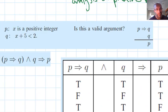Now we're going to look at an example. We've got P: x is a positive integer, and Q: x plus 5 is less than 2. We're asked, is this a valid argument? It says if P then Q, and we have Q, what's the conclusion? The conclusion is P. Is that valid?